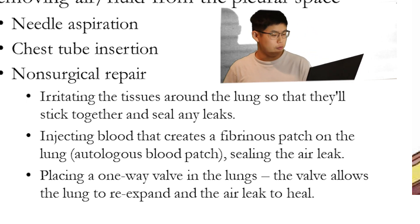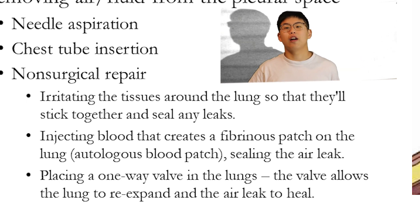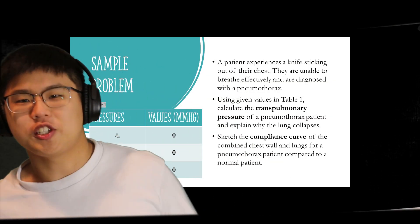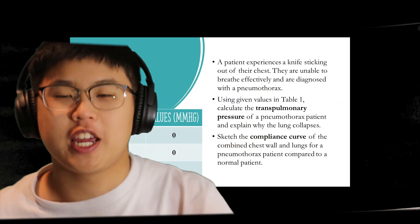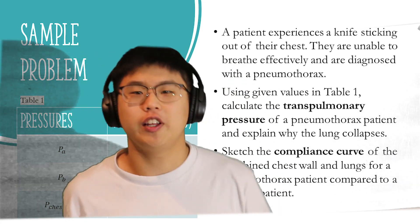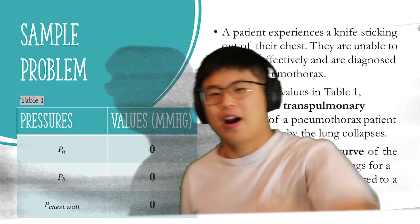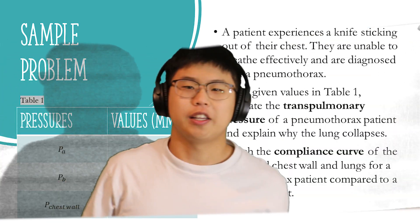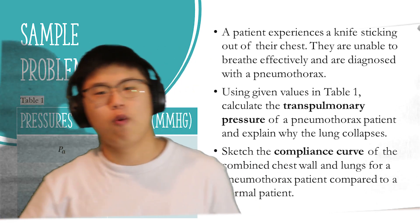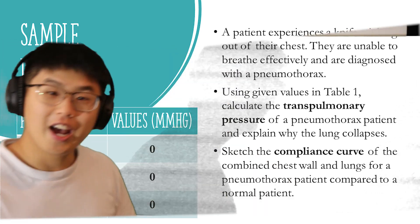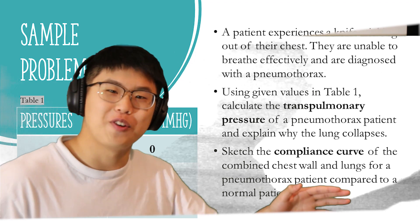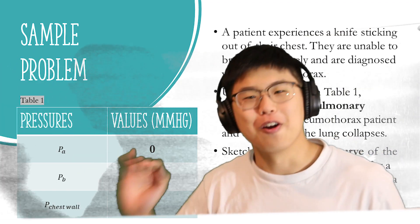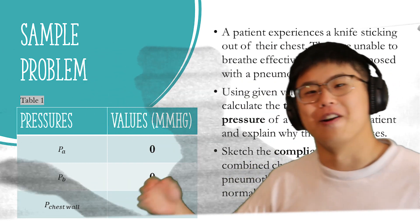Sample problem: a patient experiences a knife sticking out of their chest, is unable to breathe effectively, and is diagnosed with pneumothorax. Using the given values in Table 1, calculate the transpulmonary pressure of the patient and explain why the lung collapses. Then sketch the compliance curve for the combined chest wall and lung for a pneumothorax patient compared to a normal patient.